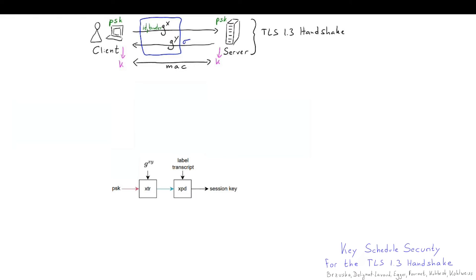Now the pre-shared key can either come from some external application or it can be a resumption key which was derived in a previous session. So in addition to the session key we also derive a resumption key, and in fact we derive many other keys, but I'll skip these in this overview.